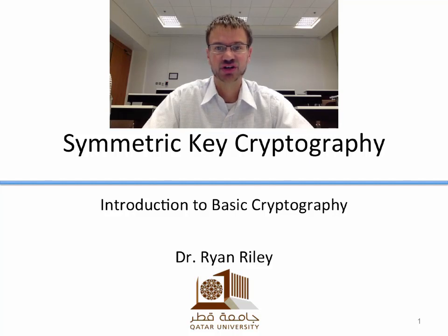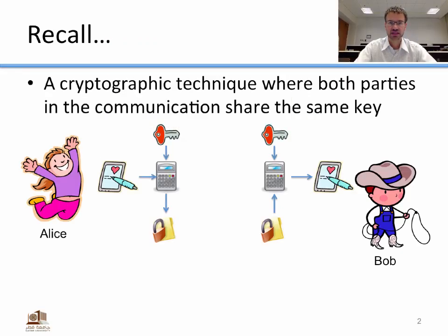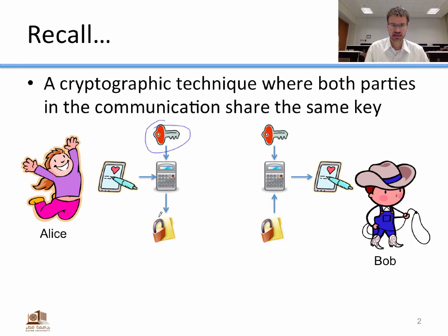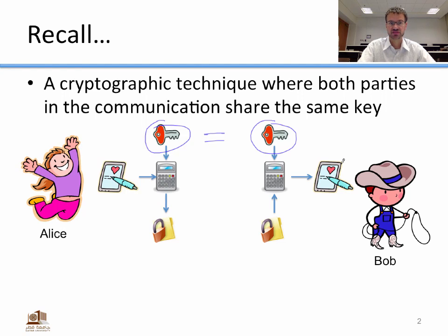Welcome to this lecture on symmetric key cryptography. Symmetric key or secret key cryptography is a cryptographic technique where both parties in the communication share the same key. Alice takes her plain text, encrypts it with a secret key, and gets ciphertext. Bob takes that same ciphertext and decrypts it with the same secret key, getting out the original plain text. That's basically how symmetric key cryptography works.